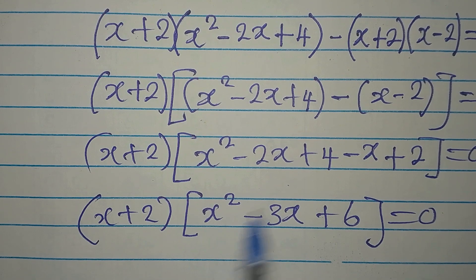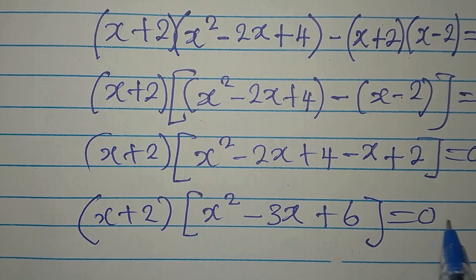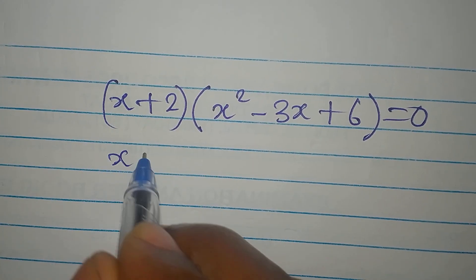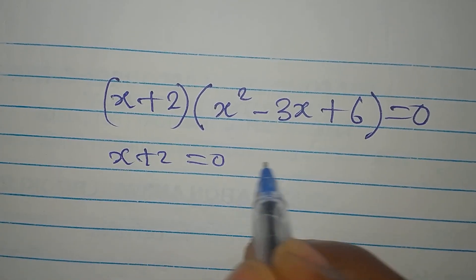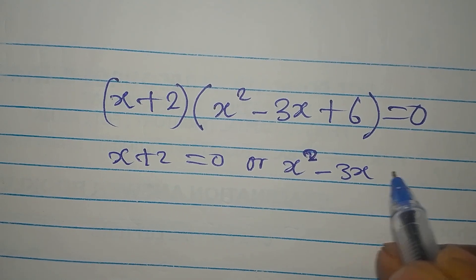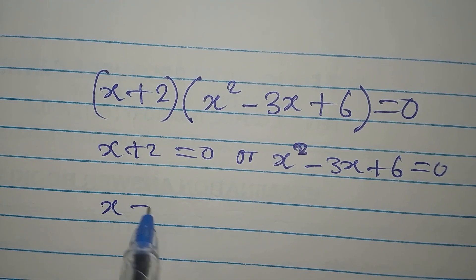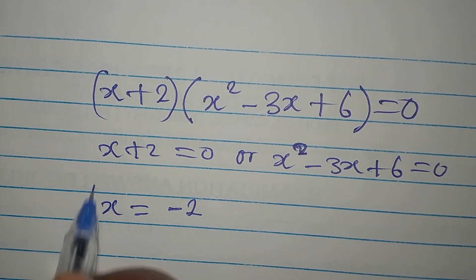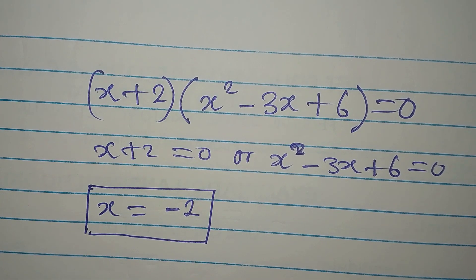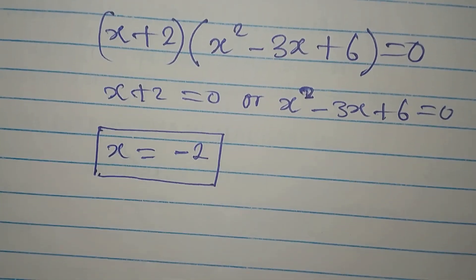From here, we set each factor equal to 0. So x plus 2 equals 0, or x squared minus 3x plus 6 equals 0. From the first factor, x equals negative 2. So this is one of the solutions to the equation. Now let's work on the quadratic to get more solutions.